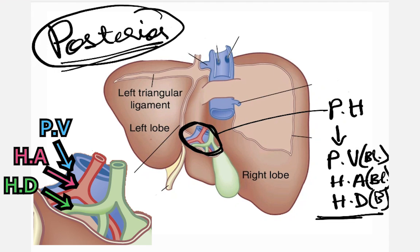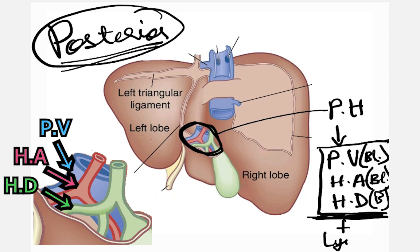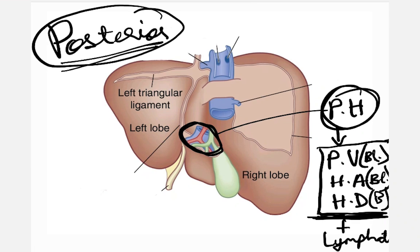These three structures — portal vein, hepatic artery, and hepatic duct — are often called portal triad structures, a term also seen in histology. Blood is carried to the liver and bile is carried away from the liver. Along with these, lymphatics and nerves also go into the liver through the gate of the liver, the porta hepatis. This is a very common question asked as a spotter in this area.